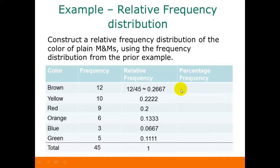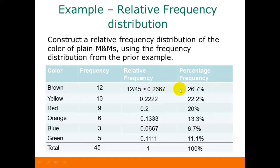To get our percentage frequencies, we take the values we got for our relative frequencies and multiply each one by 100%. How much the values are rounded depends on what you're going to do with them. In this example, I rounded the percentages to the nearest tenth of a percent. Again, you can check your answers by adding up your percentage frequencies — they should add up to 100% or something very close to it.